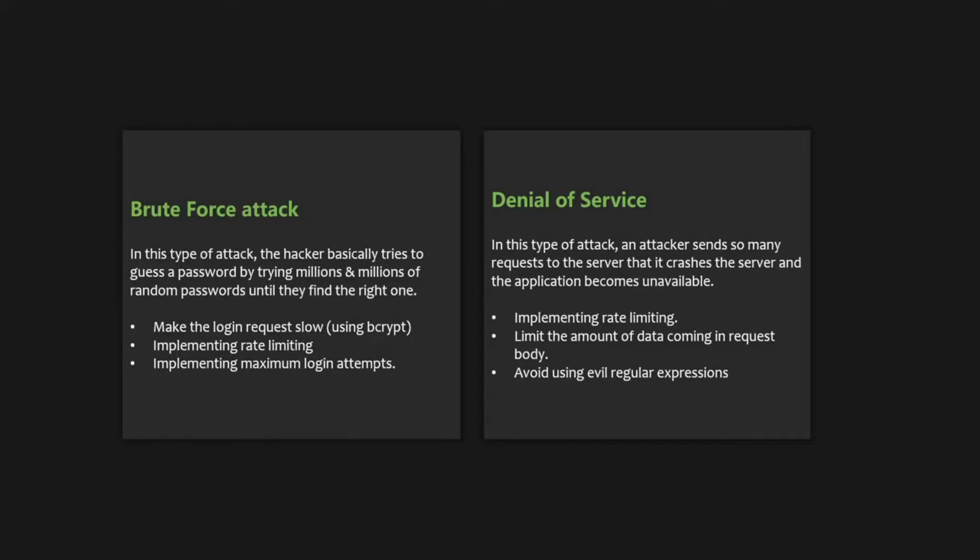Another type of attack is the denial of service attack. In this type of attack, the attacker sends so many requests to the server that it crashes the server and the application becomes unavailable. The solution for this type of attack is again implementing rate limiting, which we are going to talk about in this lecture. Another strategy is to limit the amount of data that can be sent in the body in a POST, PATCH, or PUT request, which can also help avoid denial of service attacks.